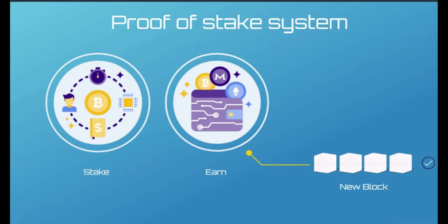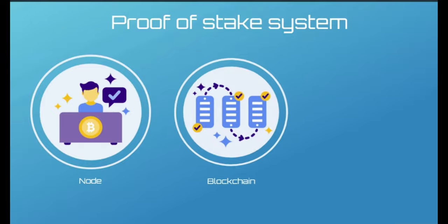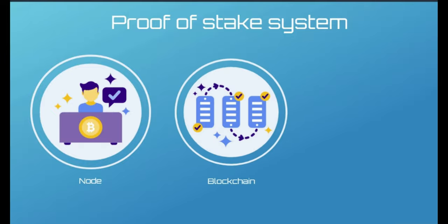The key element of a public blockchain network and proof-of-stake system is the node, which can be any computer server storing the chain's software, along with the history of records that is updating continually.